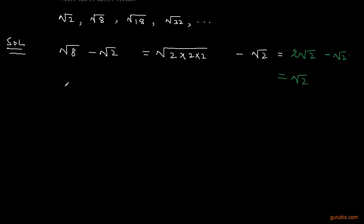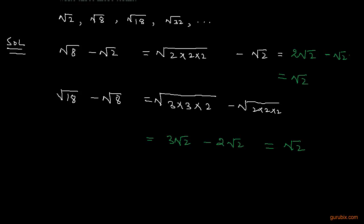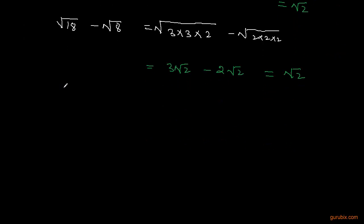Now we subtract the second term from the third term. The third term is √18 and the second term is √8. We can write √18 as 3√2 (since 18 = 3×3×2) and √8 as 2√2. So 3√2 minus 2√2 equals √2.